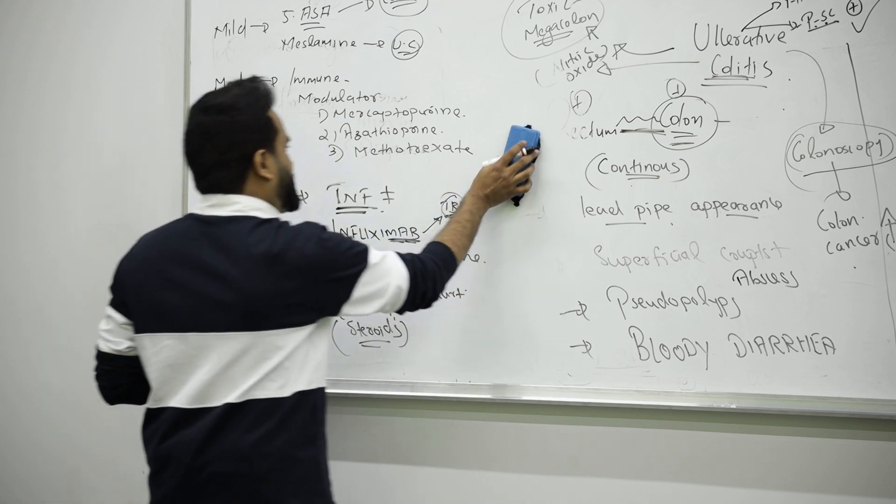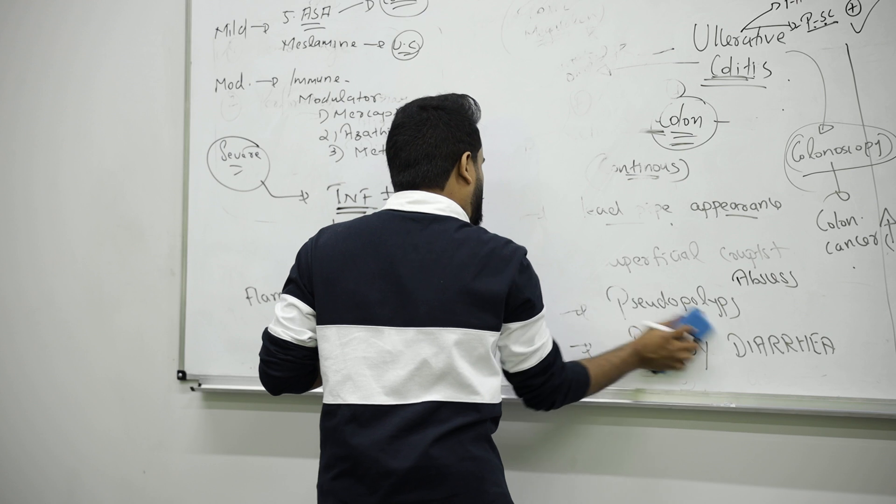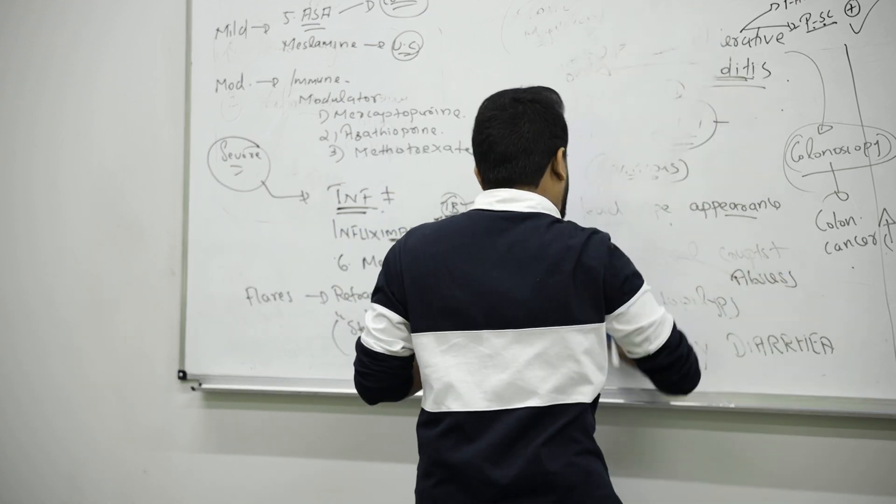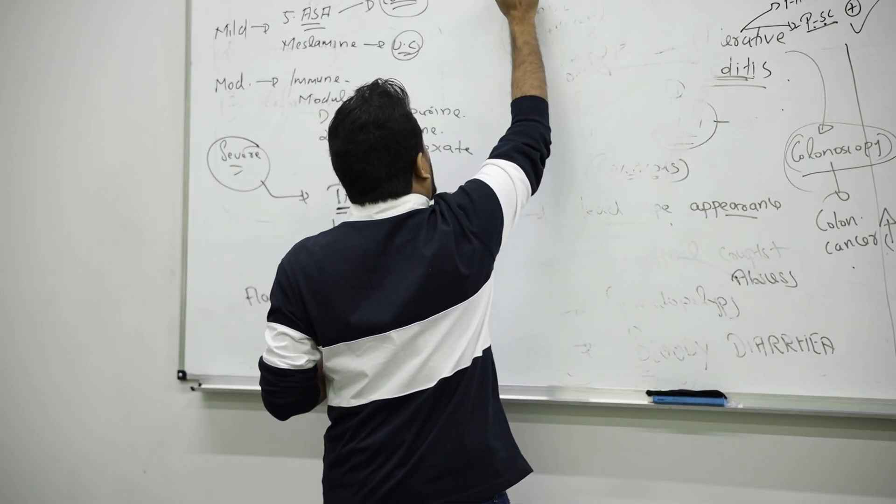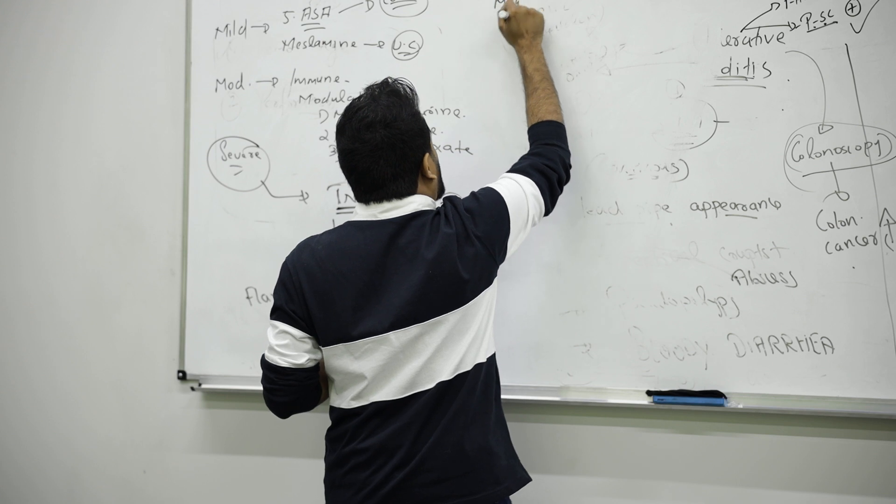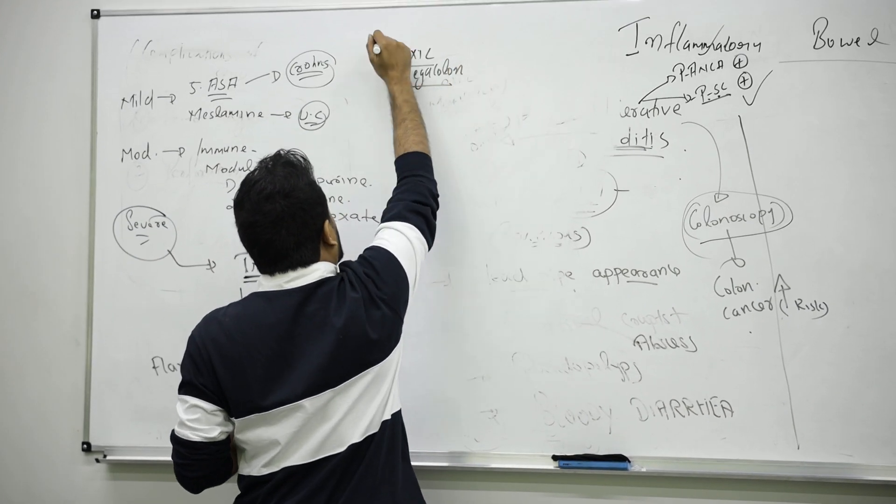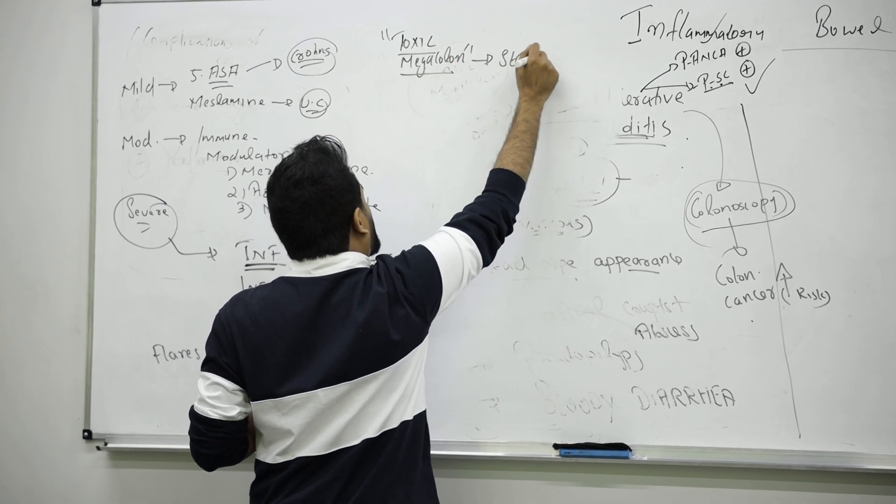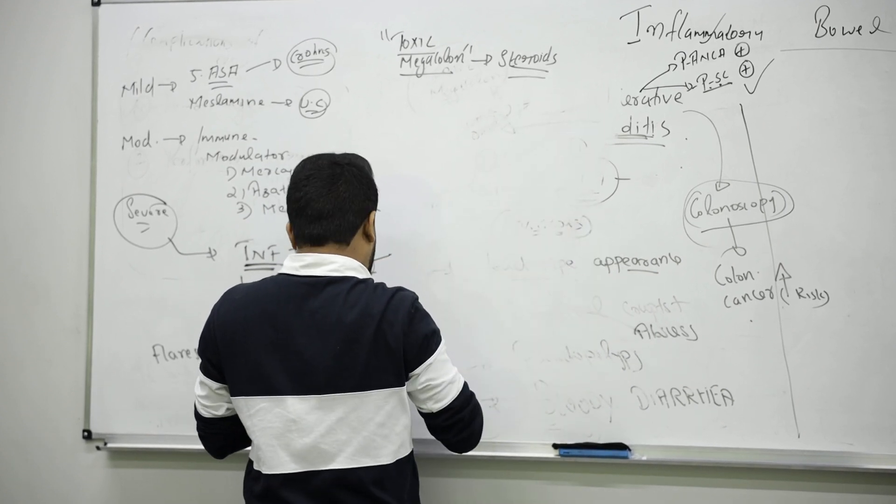For infections, if somebody has colitis, you can use clarithromycin and metronidazole to prevent infection. We have talked - sometimes they can have toxic megacolon. We have to suppress it by giving steroids like prednisolone or glucocorticoid.